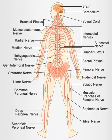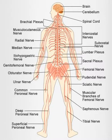The CNS consists of the brain and spinal cord. The PNS consists mainly of nerves, which are enclosed bundles of the long fibers or axons that connect the CNS to every other part of the body. Nerves that transmit signals from the brain are called motor nerves or efferent nerves, while those that transmit information from the body to the CNS are called sensory nerves or afferent. Spinal nerves are mixed nerves that serve both functions.